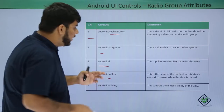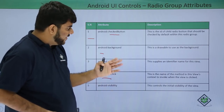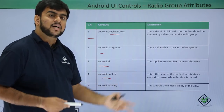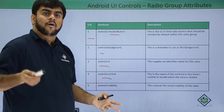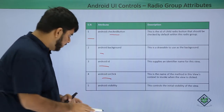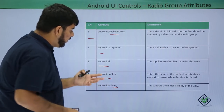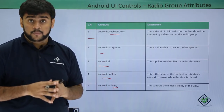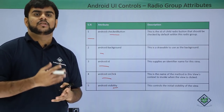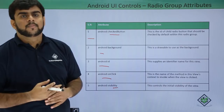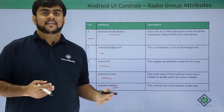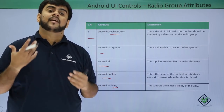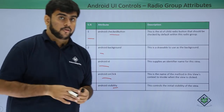Then we have onClick, which, similar to other onClicks, invokes the view's context whenever the view is clicked. And there is visibility — if I want the entire radio group to be invisible or if I want to change the visibility property for the entire group, I can change this and it would impact all the radio buttons available in that particular group.